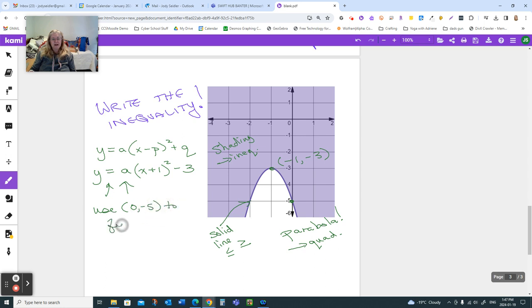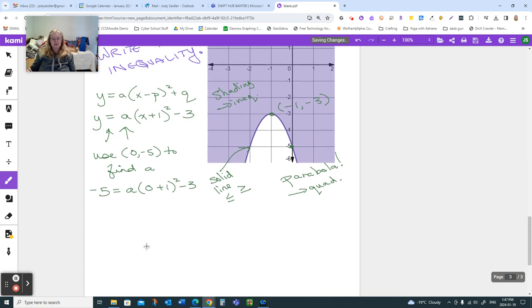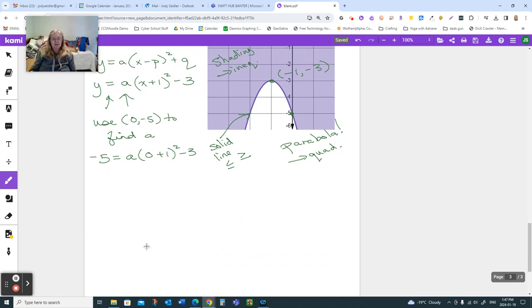We're going to use it to find A. So negative 5 is my y. 0 is my x, which is lovely because it makes the math really easy. Because 0 plus 1 is 1. Squared is 1. Times A is A. I add 3 to the other side. So A is negative 2. And I'm going to write this down the same. This still isn't done. This still isn't right. This is the equation of just the curve of the parabola line in here. Right? It's not the equation including the shaded part.